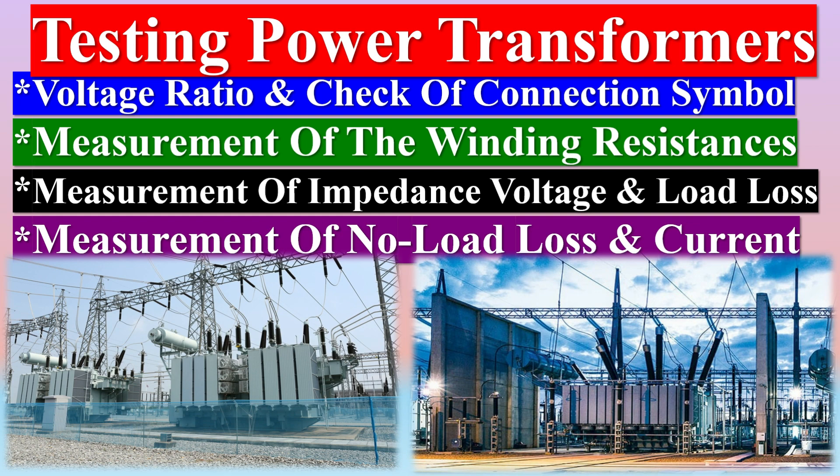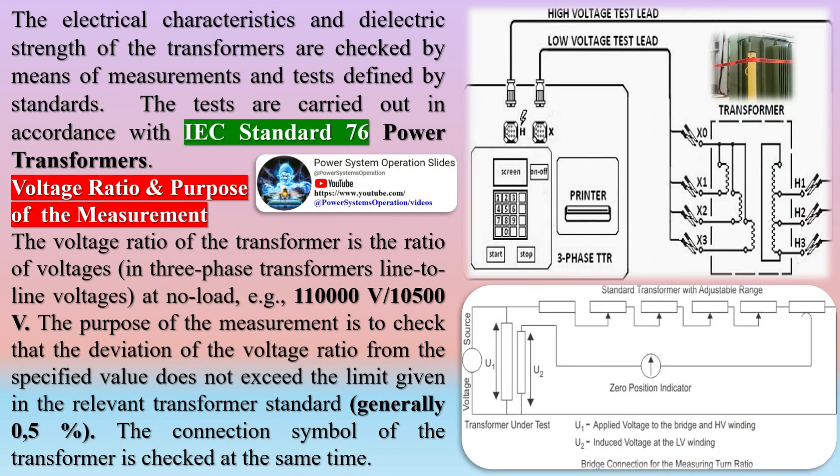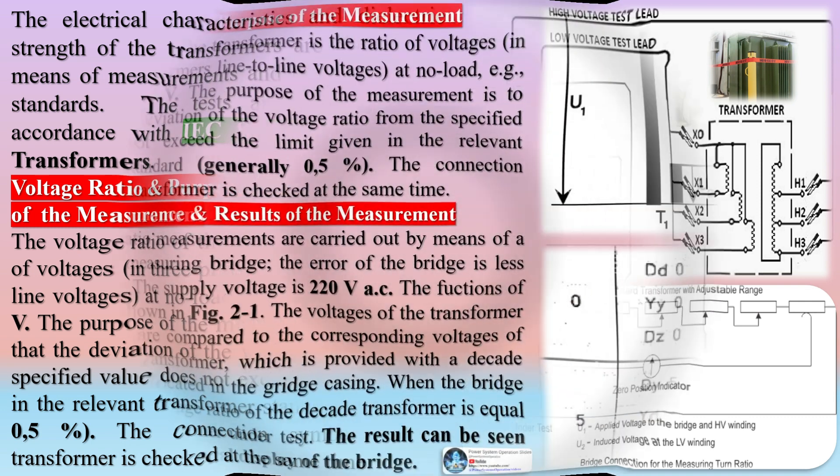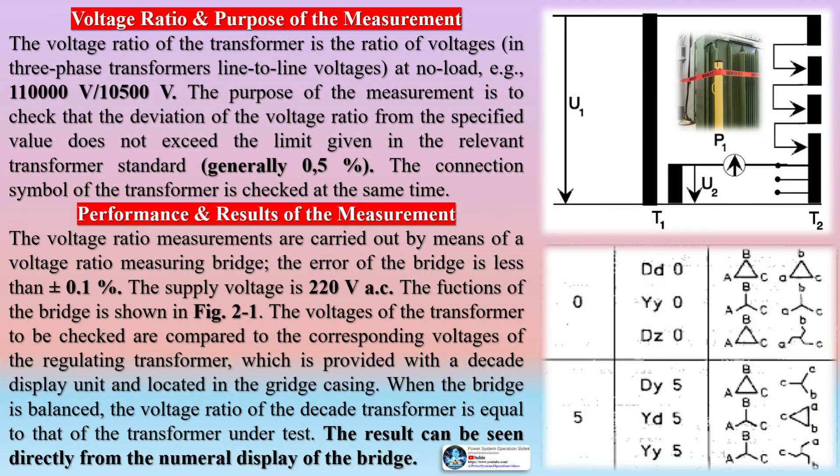With the development of the global economy, the requirements for the safety and reliability of power grid operation are getting higher and higher. One of the effective devices to ensure the stable operation of the power grid is the power transformer. For the power system, the power transformer test is of great significance and plays a key role. The power transformer is the most important equipment in the power system. In order to ensure the safe and normal operation of the power system, the transformer must be tested with professional experimental equipment for various mechanical and electrical performances before it leaves the factory and is put into use. The electrical characteristics and dielectric strength of the transformers are checked by means of measurements and tests defined by standards. The tests are carried out in accordance with IEC standard 76 power transformers.